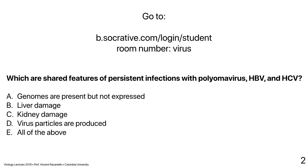A poll asked which features are shared by polyomavirus, HBV, and HCV persistent infections. The correct answer is that virions are produced in all three. Genomes being present but not expressed is incorrect — polyomaviruses are often making virus particles, and HBV and HCV are always making virus particles. Liver damage is only for HBV and HCV, not polyomavirus. Kidney damage is not a feature of these three. So the commonality is that virus particles are produced in all three — distinct from the latent herpes virus infections coming next.